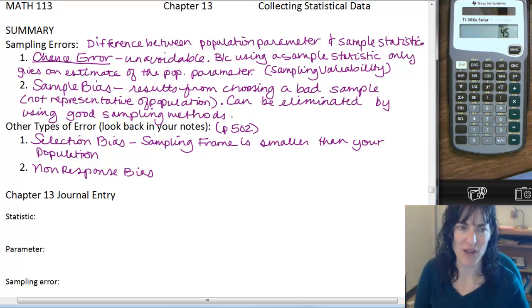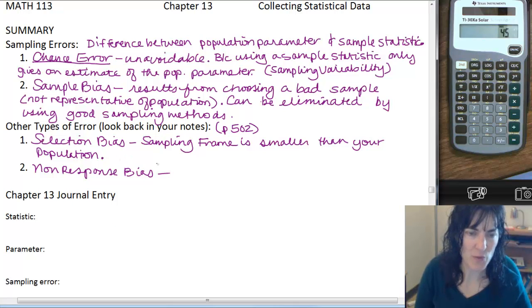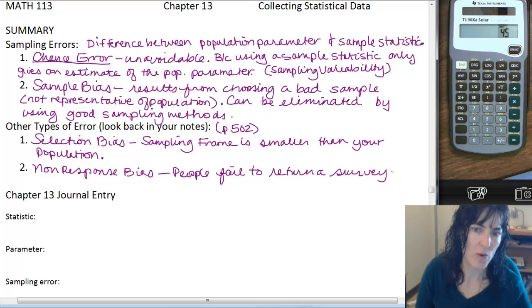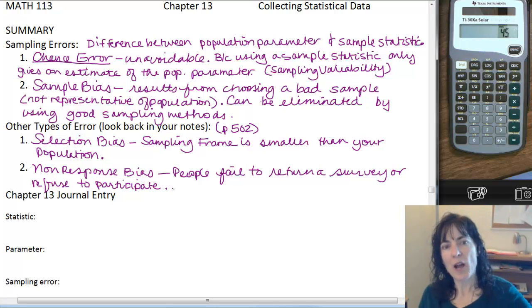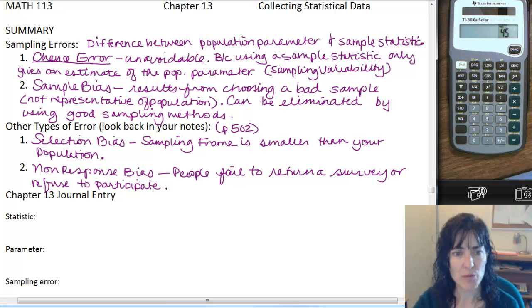Non-response bias. When people fail to return a survey or refuse to participate. So they don't turn it in, they don't want to do it. It's a type of selection bias. And so that could happen in any type of survey. You have selection bias when your sampling frame's smaller than your population. And the non-response bias, sometimes you just have people uninterested or reluctant to participate. There's not a lot you can do about that.